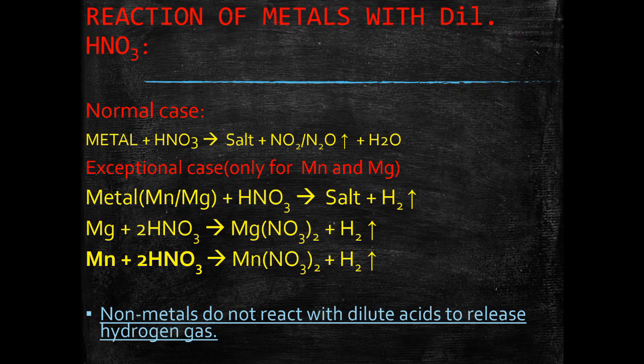In normal cases, when metal reacts with dilute nitric acid, it gives salt, NO2 or N2O with water. But in the case of manganese or magnesium, which is an exceptional case, these two metals react with nitric acid to give salt and hydrogen gas.